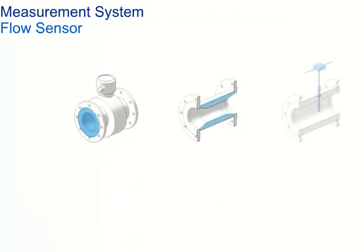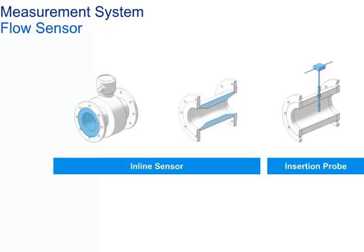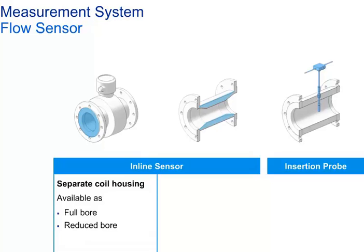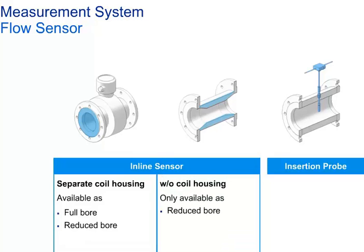There are different constructions of the sensor body available. In general, there are two main types: inline and probe sensors. With inline sensors, the coils can be in a separate housing outside the meter tube, or they can be inside the meter tube. There are also insertion types which are inserted into the flow conduit; due to this insertion construction, there is a reduction in the cross-section area of the bore — we have reduced and octagonal bores. With insertion probes, the sensor design is different from the inline types.